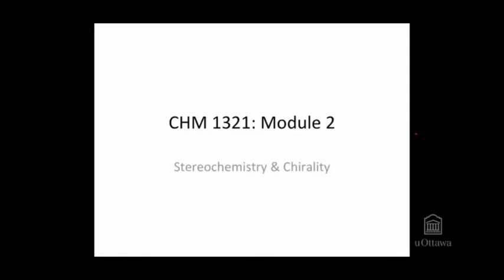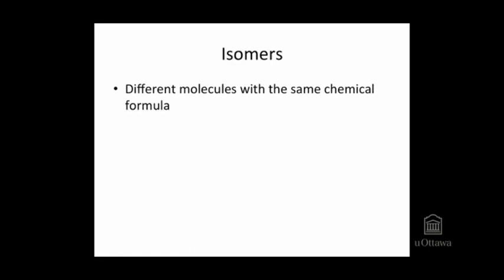In this video we're going to talk about the concepts of stereochemistry and chirality. The first definition that we'll look at is the definition for isomers. Isomers are different molecules with the same chemical formula.